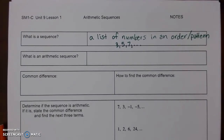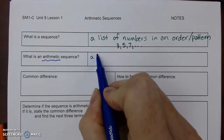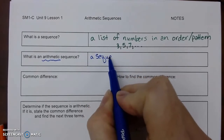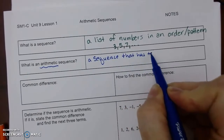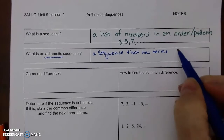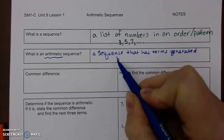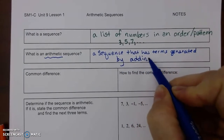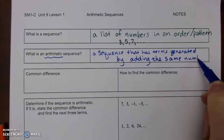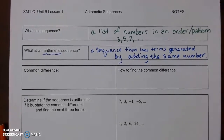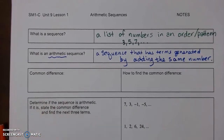An arithmetic sequence is a type of sequence that refers to a sequence that has terms generated by adding the same number. The same number that we're adding is called the common difference.